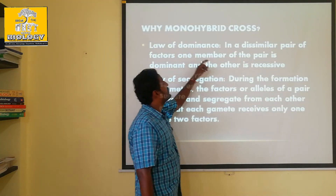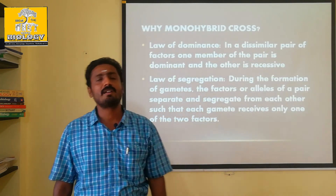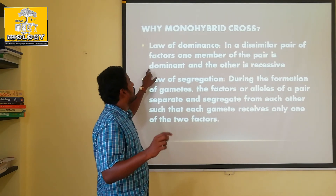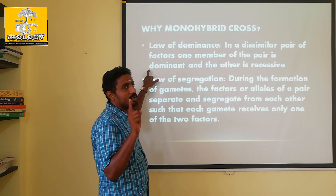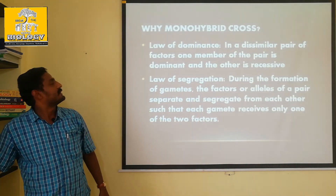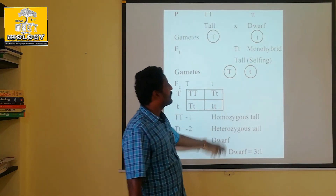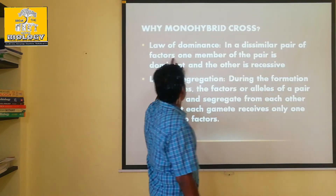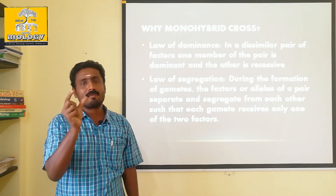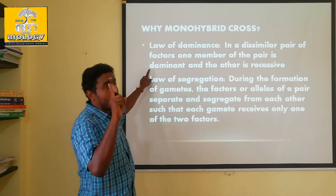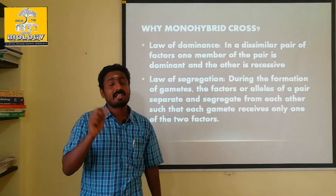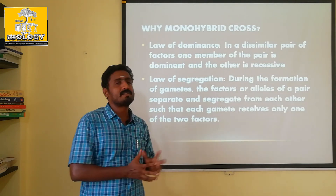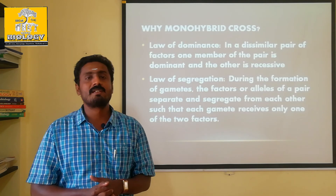What is the law of dominance? In a dissimilar pair of factors — a dissimilar pair of factors is the heterozygous condition. Heterozygous is capital T, small t. The capital T, small t — capital T is dominant. One member of the pair is dominant and the other is recessive. That is Mendel's law of dominance. The dissimilar pair of factors is capital T, small t. The other factor is dominant and the other is recessive. The monohybrid cross is made to prove Mendel's laws.